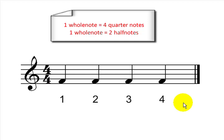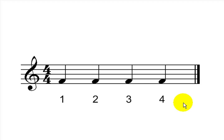Let's take a listen. As you notice, every quarter note took 1 beat. I will now count along with the example, and you will hear that each time I say a number, 1 quarter note appears. 1, 2, 3, 4.